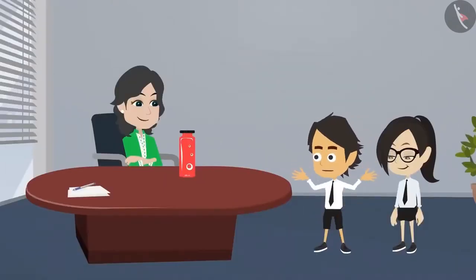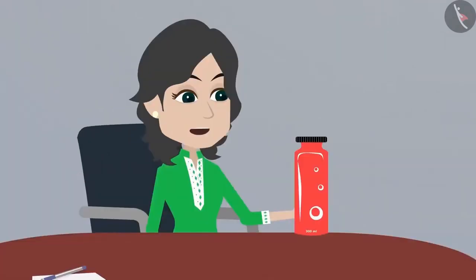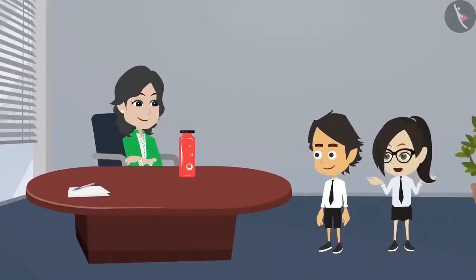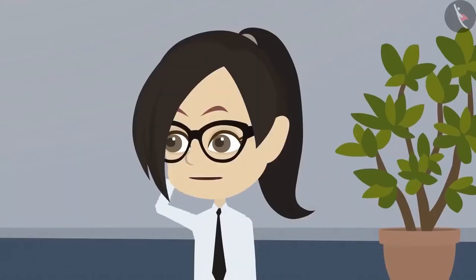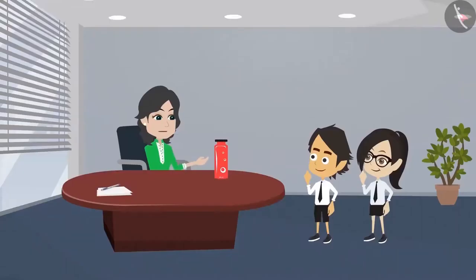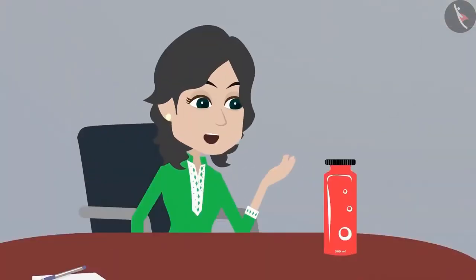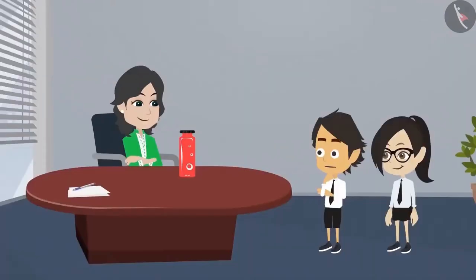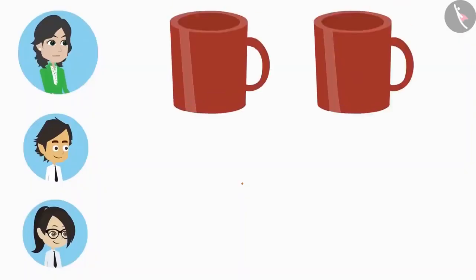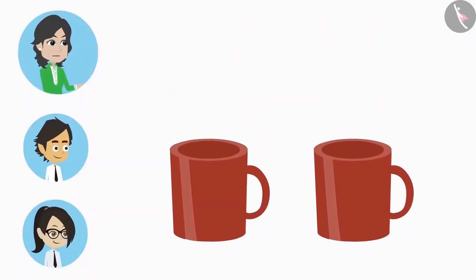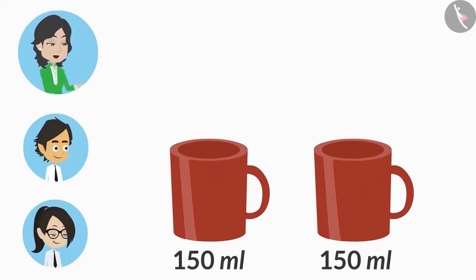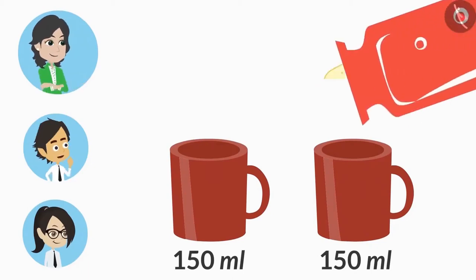Am I correct, madam? You are absolutely correct, Ayushman. But how will we measure 150 ml? There are different measuring cups to measure liquid. But we do not have those cups with us right now. Then how will we measure the buttermilk? Look, I have two cups here. A normal size cup is approximately 150 ml. You can pour the buttermilk into both these cups.